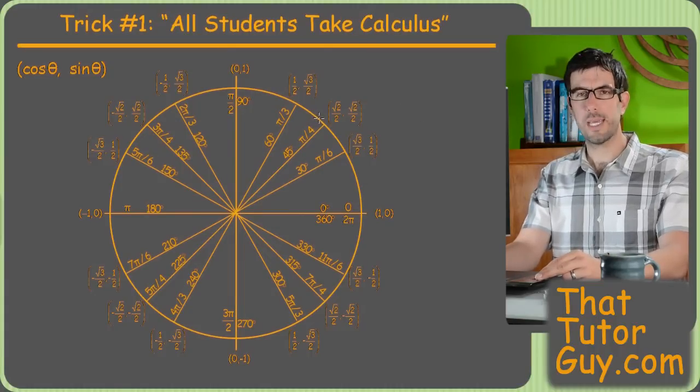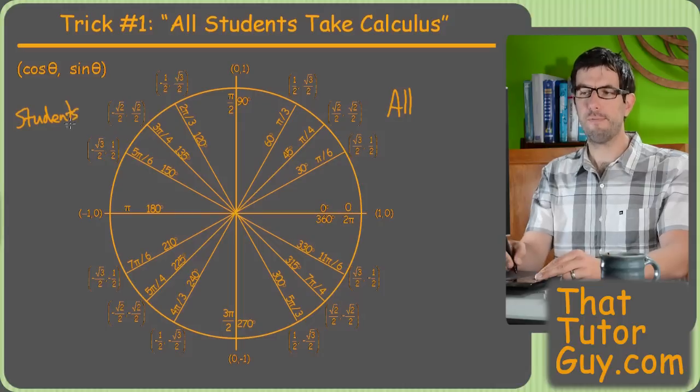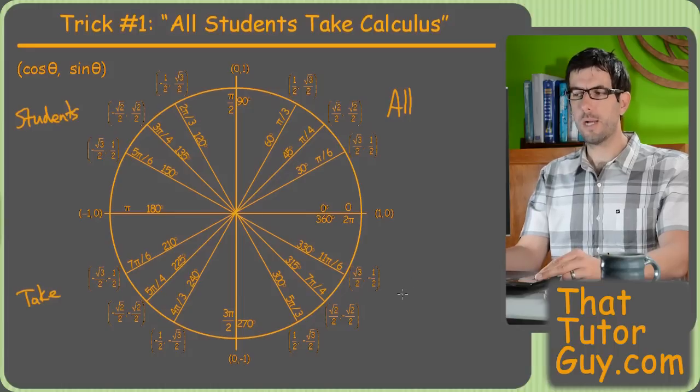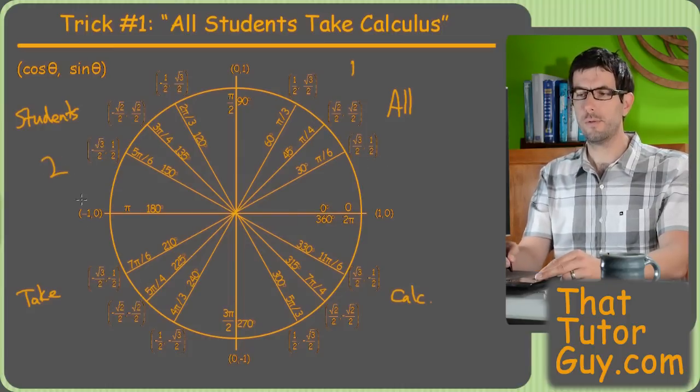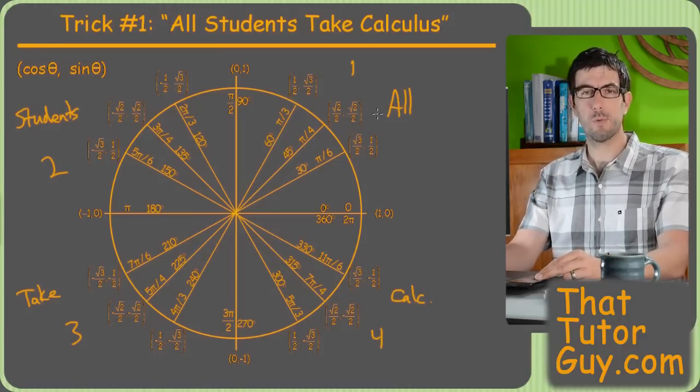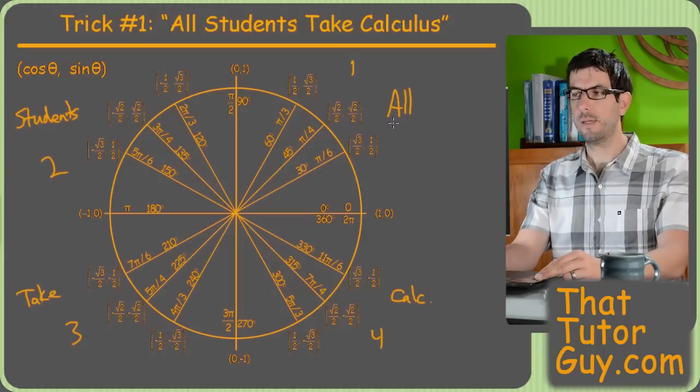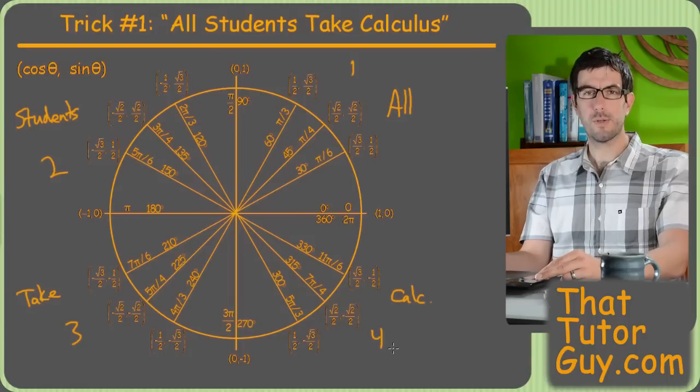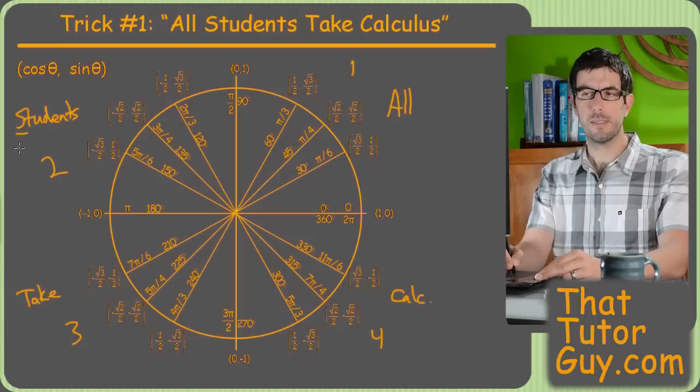So trick number one, all students take calculus. I've been surprised over the years, I actually learned this from a student many years ago, and I've been surprised at how many other students did not know this already. The deal is that in the four quadrants, which are 1, 2, 3, and 4, the sine and cosine might be positive or negative depending which quadrant we're in. So all students take calculus tells you which one of the trig functions are positive.